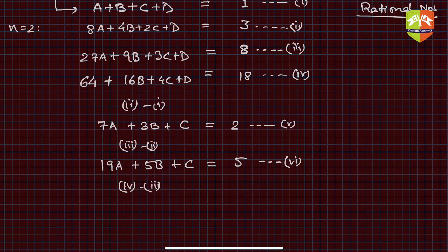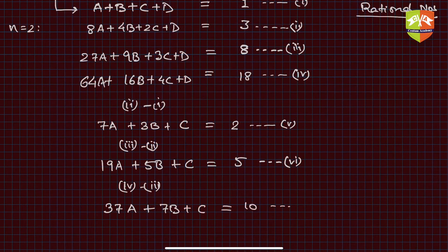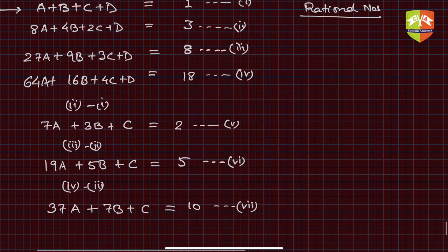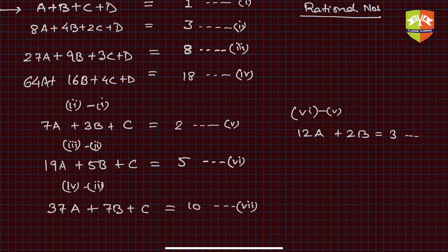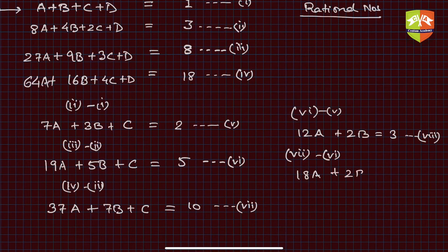Equation 4 minus equation 3 gives: 37a + 7b + c = 10. Call this equation 7. Now we eliminate c: equation 6 minus equation 5 gives 12a + 2b = 3. Call this equation 8. Equation 7 minus equation 6 gives 18a + 2b = 5. Call this equation 9.